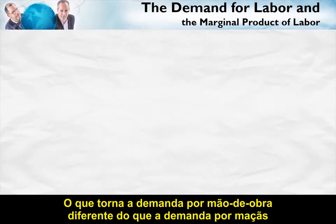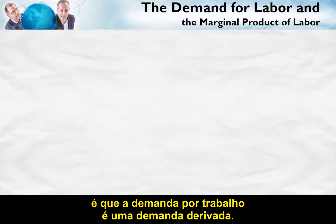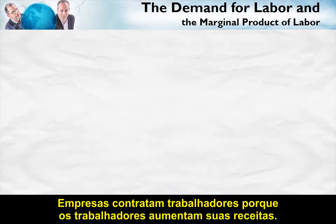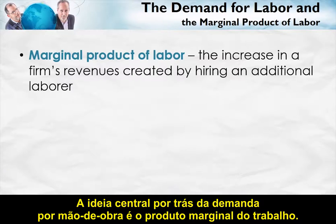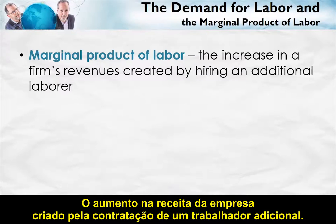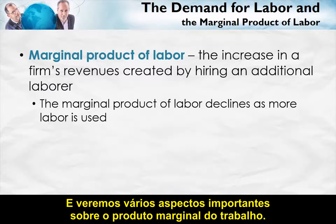What makes the demand for labor different than the demand for apples is that the demand for labor is a derived demand. Firms hire workers because the workers increase their revenues. The key idea behind the demand for labor is the marginal product of labor — the increase in a firm's revenues created by hiring an additional worker. We're going to see several important things about this marginal product of labor.